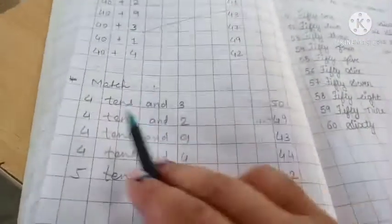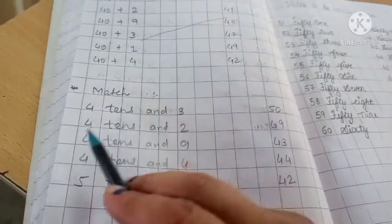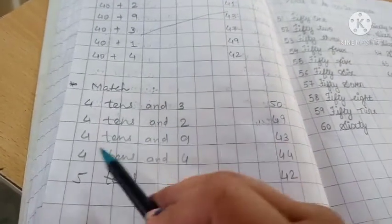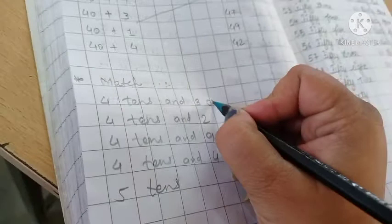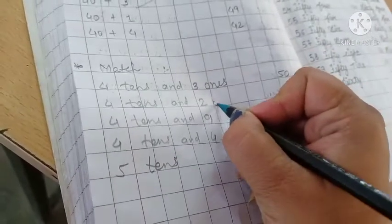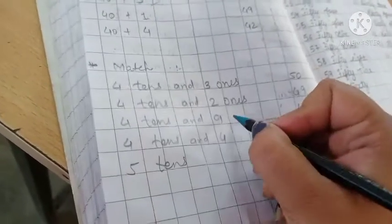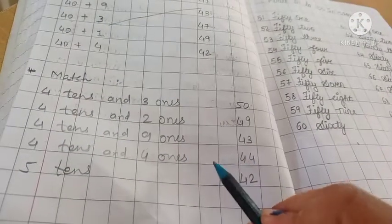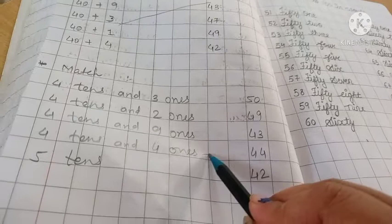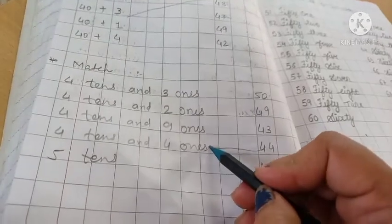Here match: four tens and three, four tens and two, four tens and nine, four tens and three. Here ones. Three ones, four ones. So we will match 44, here in front.